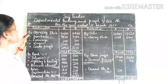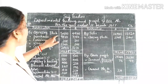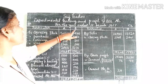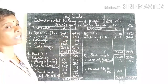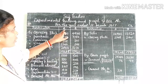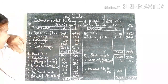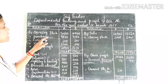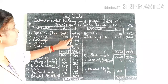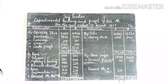First item on the debit side: Opening stock — Department A: 5,400 rupees, Department B: 4,900 rupees. Purchases: Department A: 9,800 rupees, Department B: 7,350 rupees.